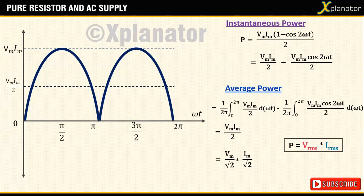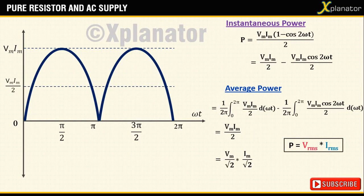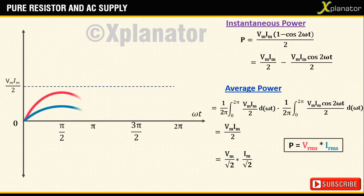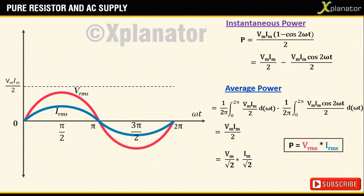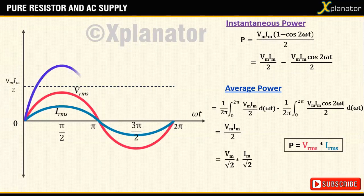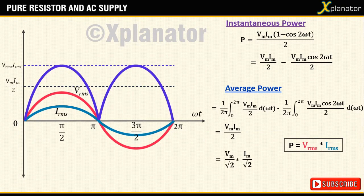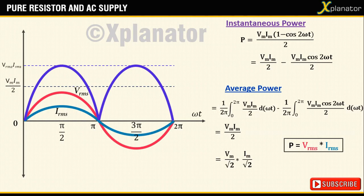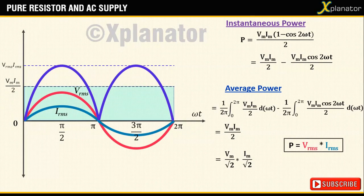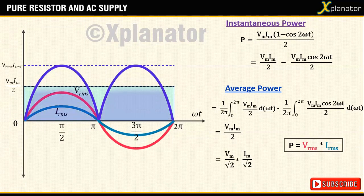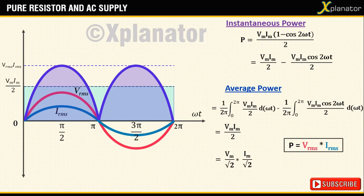For power curve in terms of rms quantities, plot vrms and irms. Product of vrms and irms is the average power. If you evaluate the area under the curve vm im by 2 and that under the sinusoidal curve vrms into irms, it will turn out to be just the same.